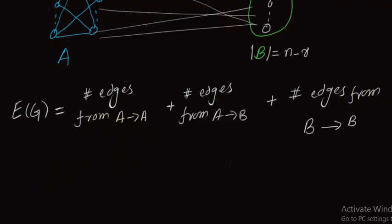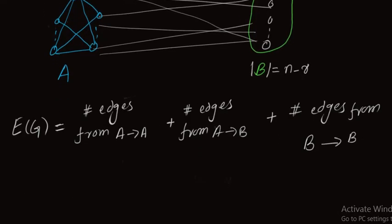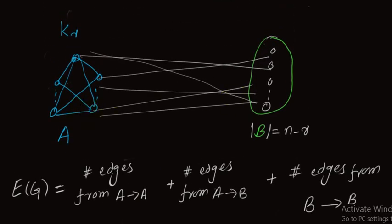The number of edges in set A: since Kr is a complete subgraph with r vertices, we use the formula for a complete graph. So the total number of edges in set A is r(r−1)/2.